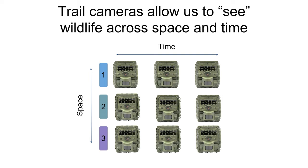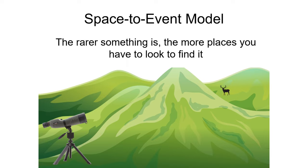The method we've used in Idaho in recent years to estimate the state's wolf population is called space-to-event. The space-to-event model is a new method of estimating abundance of unmarked animals, and it works on the idea that the rarer something is, the more space you'll have to survey before you find it.